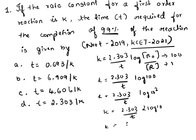is 1, so k = 2.303/t × 2. To find the time, rearranging the equation: t = 2.303/k × 2, which gives